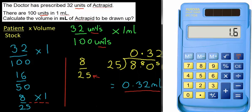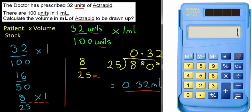Checking with the calculator — the units in the fraction were the same, so I put the formula in directly: 32 divided by 100 times 1. The answer is 0.32 millilitres. Excellent — we're halfway through.